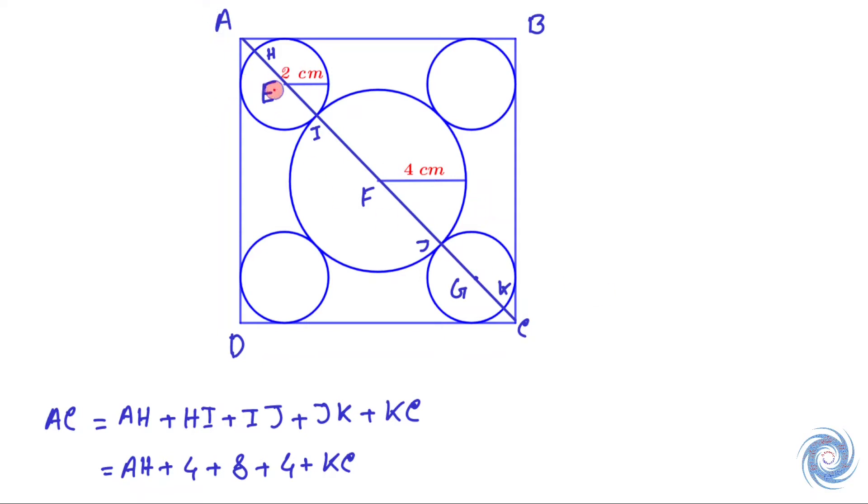Let us draw a line from E which is perpendicular to ED and also draw a line perpendicular to AB. Let us take this point as L and this as M. Clearly, AL equals EM, which is the radius of the small circle, and LE equals AM. Therefore, AMEL is a square.